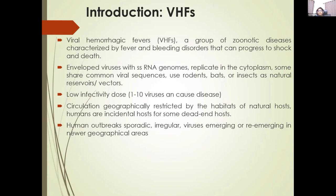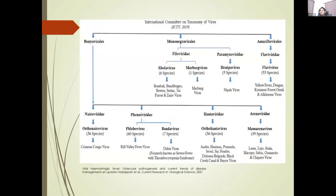Human outbreaks of viral hemorrhagic fevers are very sporadic and irregular, and we see many of these viruses keep emerging and re-emerging as they reach newer geographical areas with susceptible hosts. Orthohantiviruses earlier belonged to family Bunyaviridae, but now have their own family, Hantaviridae. This slide presents the classification we typically use.